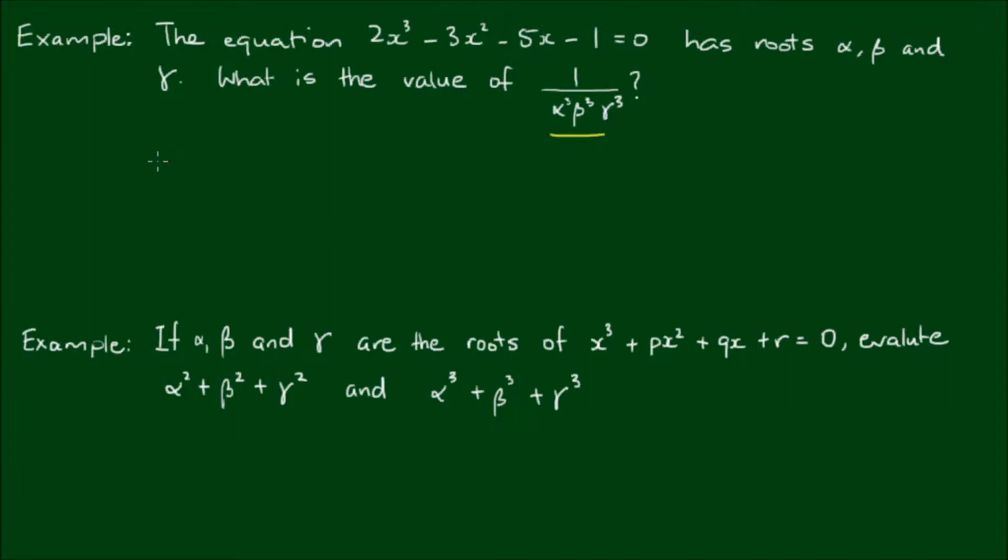So first of all, this term here can be rewritten as 1 over αβγ, all cubed. And of course, this can be rewritten as αβγ to the negative 3. And as we established before, the product of all the roots is equal to negative d on a. And of course, this is still raised to the negative 3rd power.